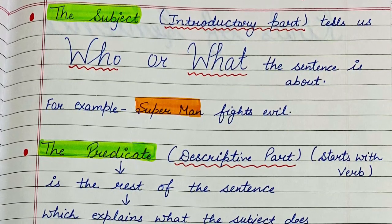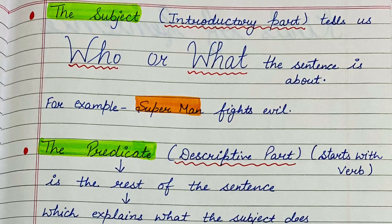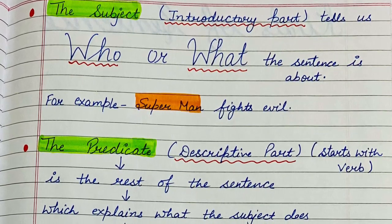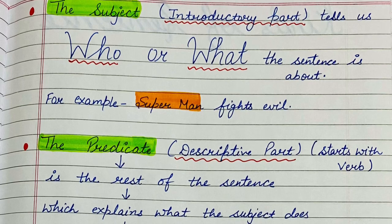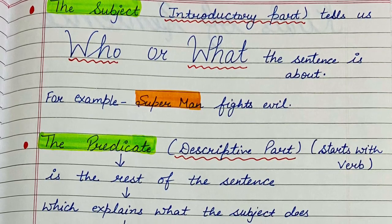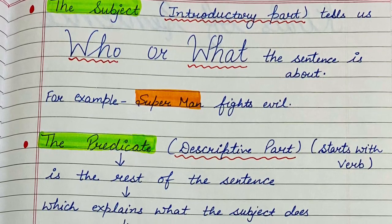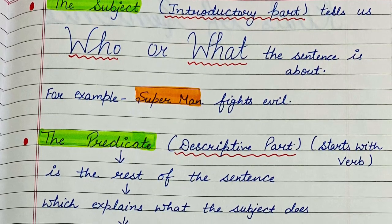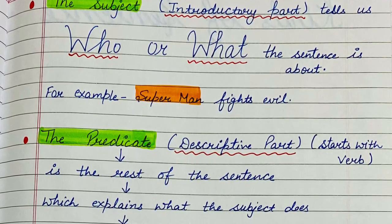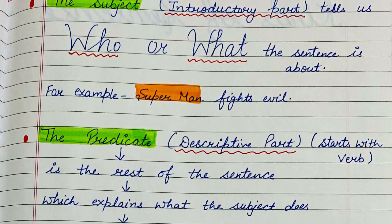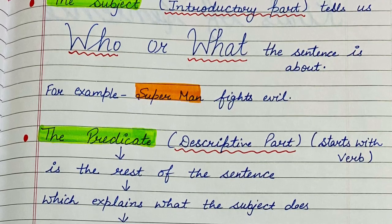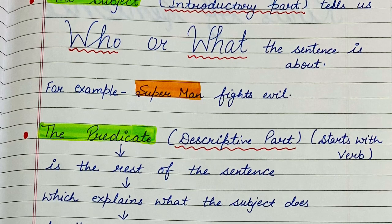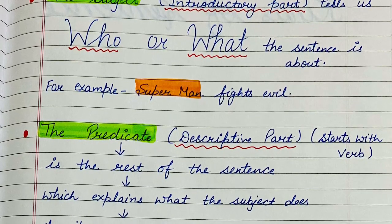For example, 'Superman fights evil.' Now you can ask a question to yourself: who fights evil? Superman fights evil. I'll take the example spoken earlier: 'The gardener is watering the plants.' You can ask the question, who is watering the plants? So the subject is about who or what.